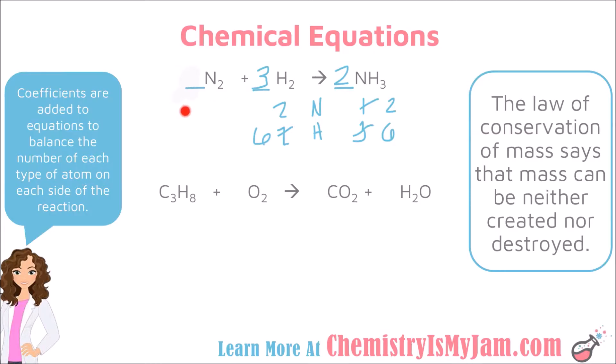A blank coefficient means the coefficient is one — that is fine. The beauty of balancing equations is that you can always check yourself: step back and verify that the number of each type of atom matches on both sides. Two nitrogens on the left, two on the right. Three times two is six hydrogens on the left, and two times three is six hydrogens on the right. The reaction is balanced.